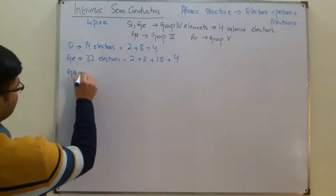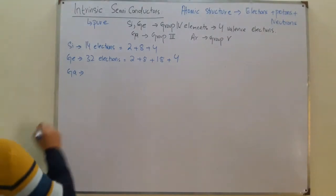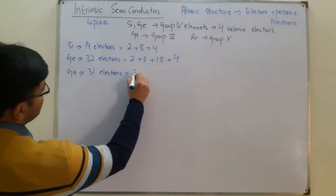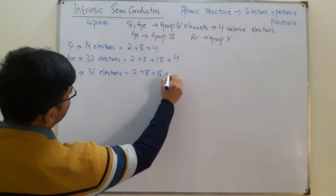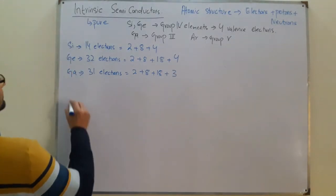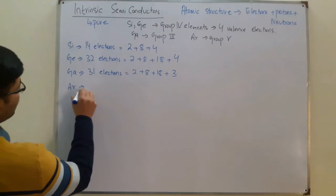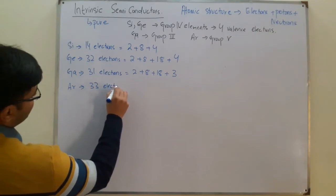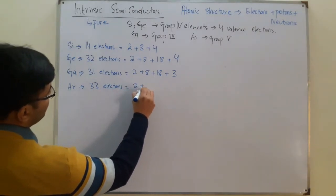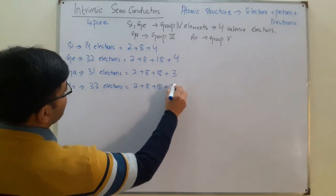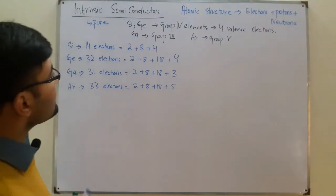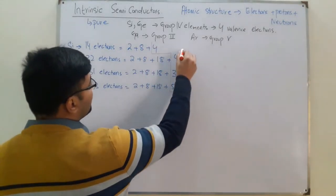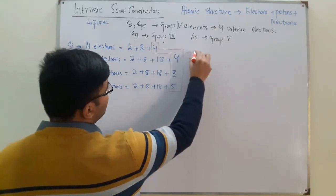Gallium has 31 total electrons: 2 in the first shell, 8 in the second, 18 in the third, and 3 in the last. Arsenic has a total of 33 electrons: 2 in the first, 8 in the second, 18 in the third, and 5 in the fourth shell. These outer electrons — 4, 4, 3, 5 — are called valence shell electrons.